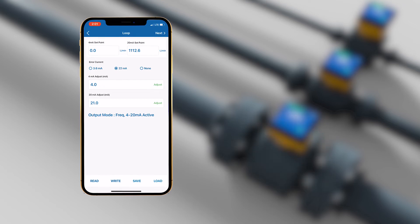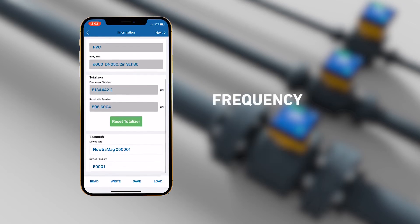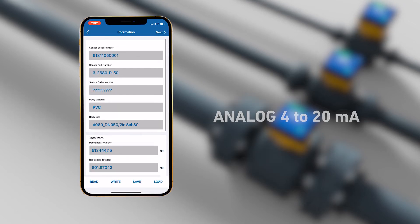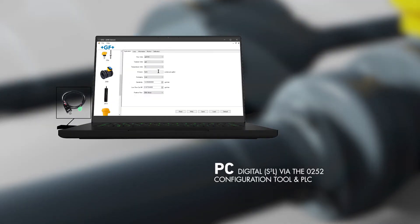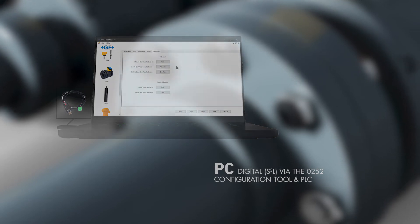User selectable choices from output signals include frequency, analog 4 to 20 milliamp, smartphone tablet, Bluetooth, PC, digital S3L via the 0252 configuration tool, and PLC.